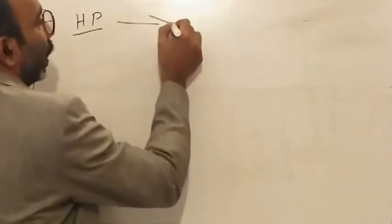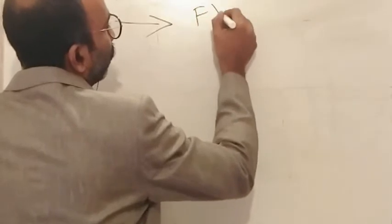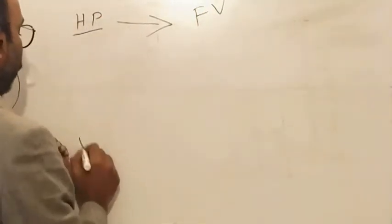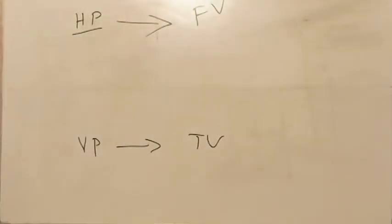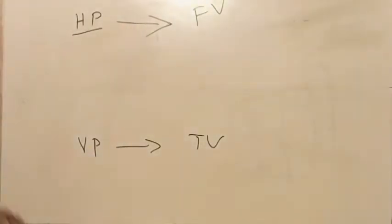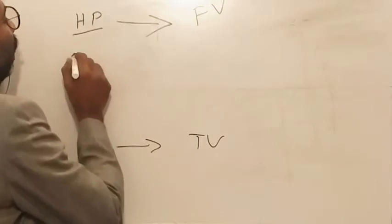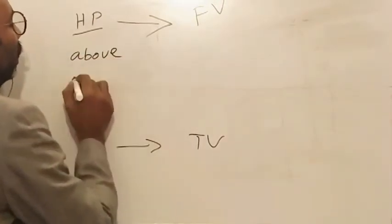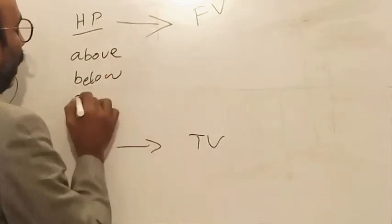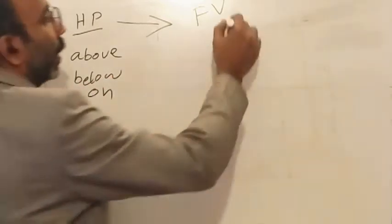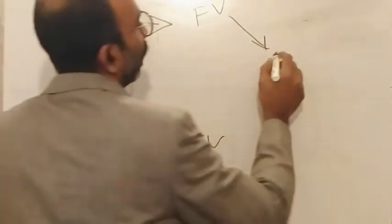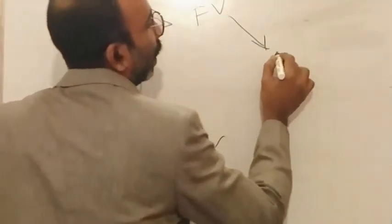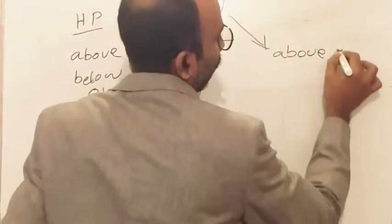Relation with HP is used to find the front view, and relation with VP is used to find the top view. What are the relations with HP? There are three: above, below, and on. If it is above HP, then the answer of the front view is above XY line.